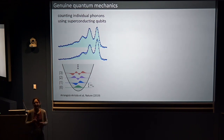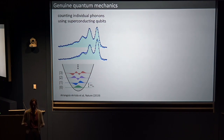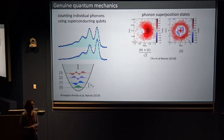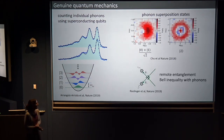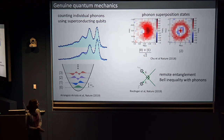We're now in a domain where we're doing genuine quantum mechanics — real mechanics. People can count individual phonons using superconducting qubits. Photons are individual particles of light; phonons are excitations of the harmonic oscillator of these mechanical objects. They can put phonons in superposition states and map their quantum states. You can do remote entanglement and even show Bell's inequalities with phonons. These are some of the exciting things happening with controlling mechanical excitations with light, all in just the last couple of years.